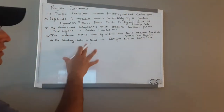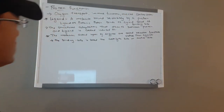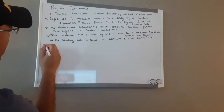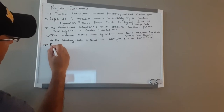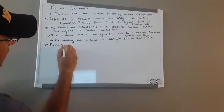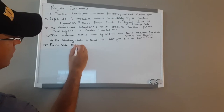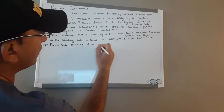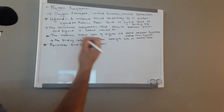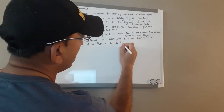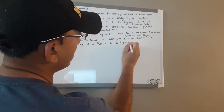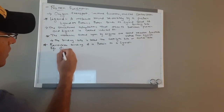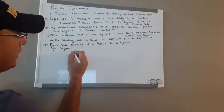Now, having discussed a few terms related to protein function, we'll first discuss the reversible binding of protein to a ligand. The example we'll use is oxygen binding proteins.